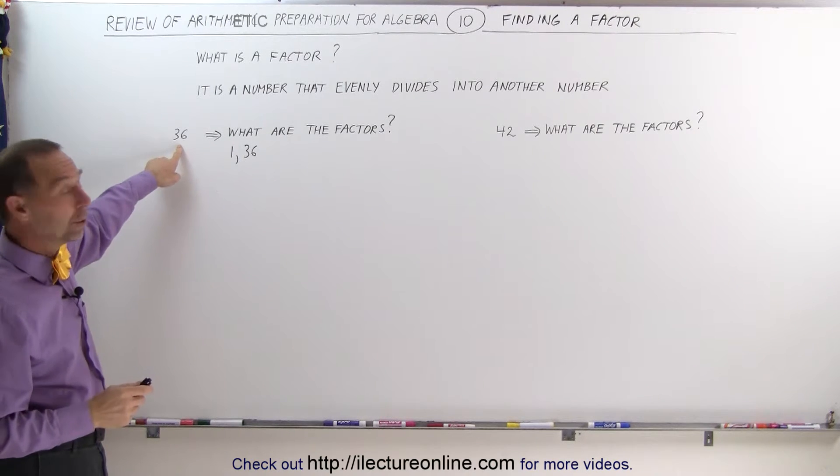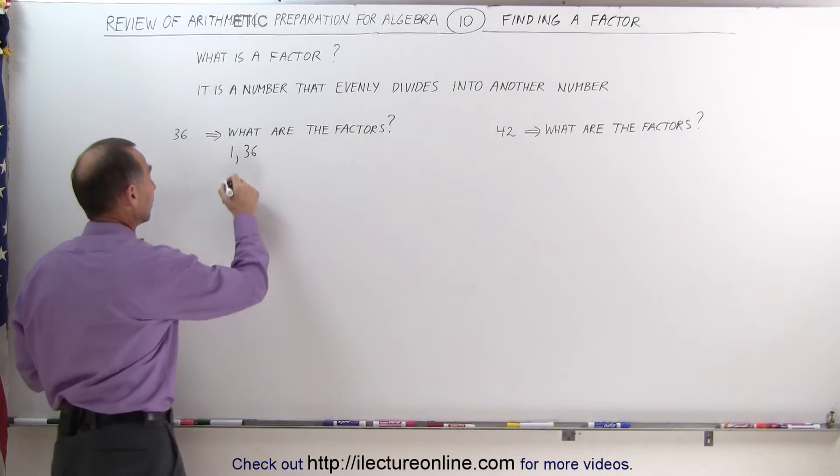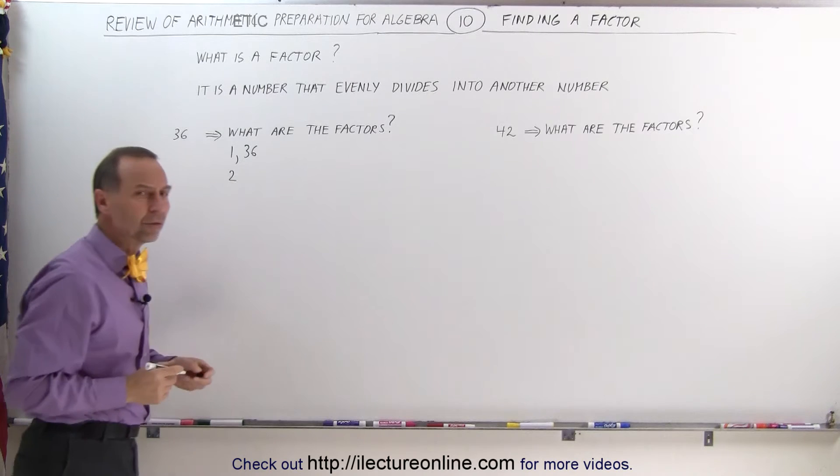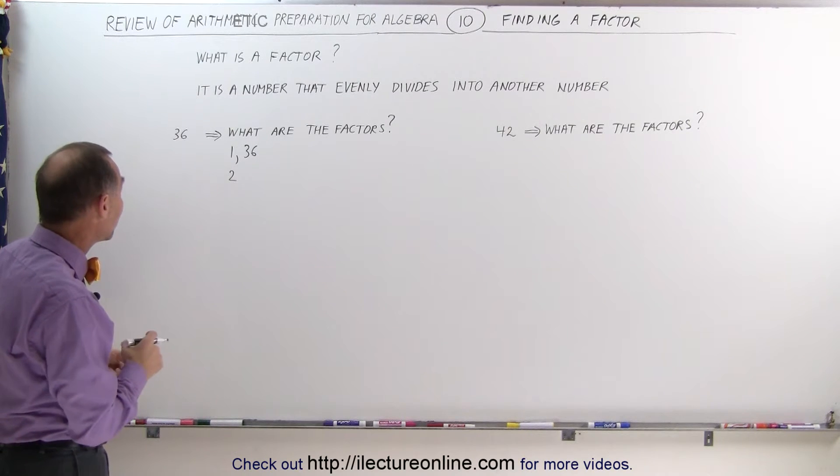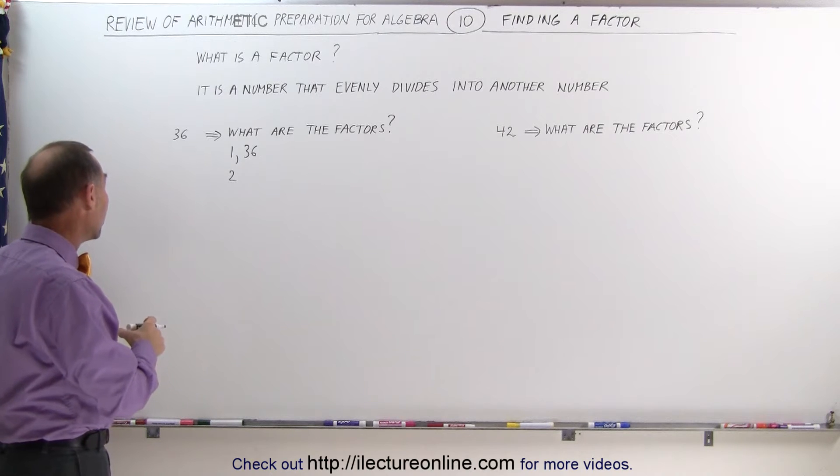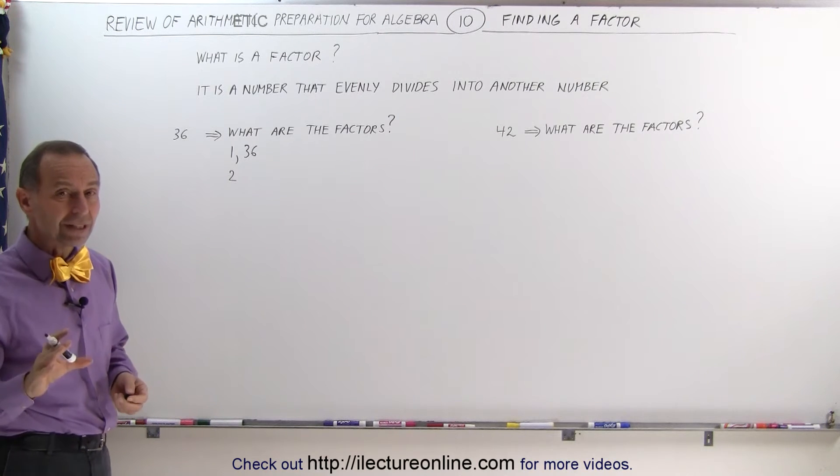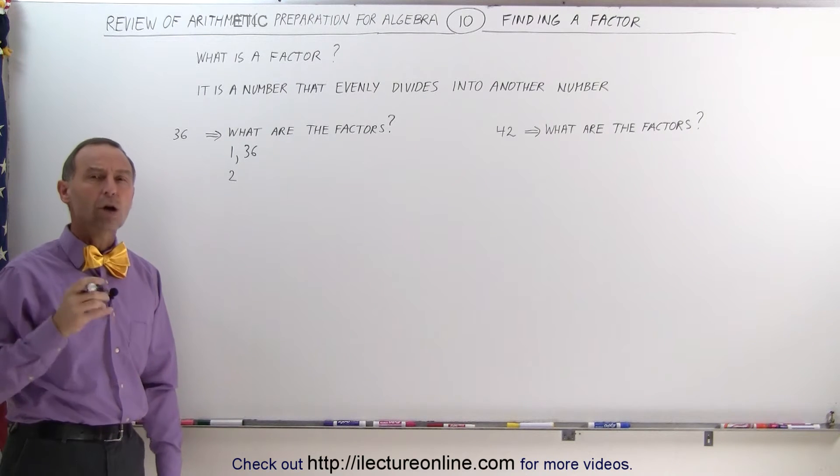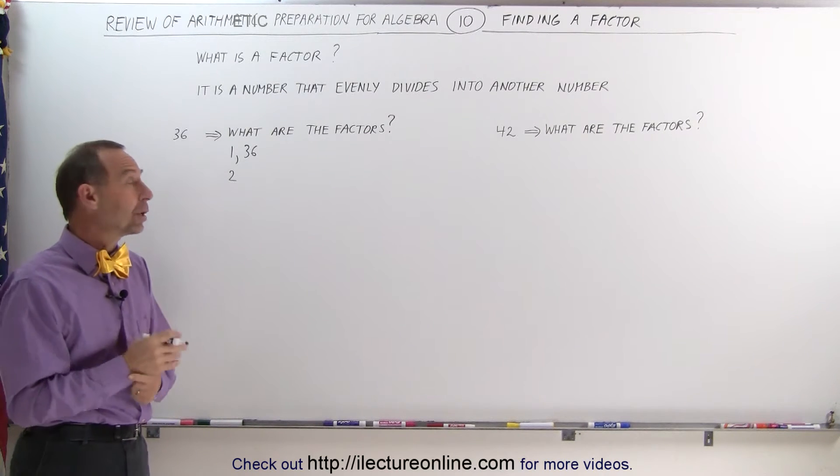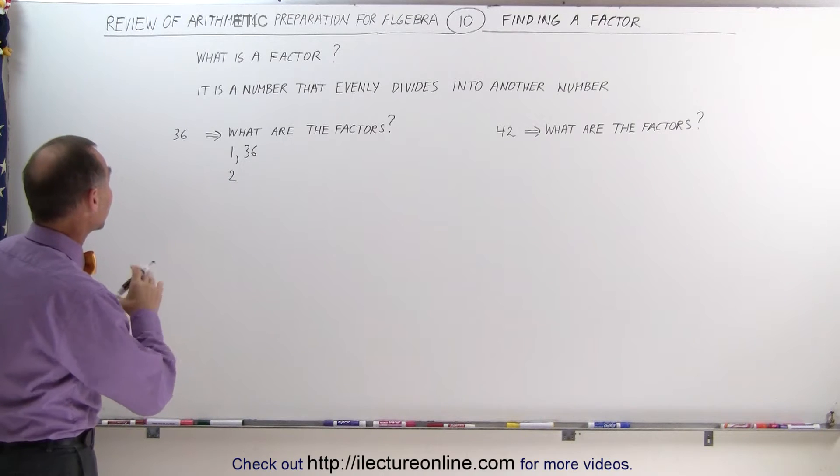But what other numbers fit evenly into 36? Well, since it's an even number, 2 would also be a factor. What other numbers? As you play around with it, you can probably think of the number 6 perhaps, the number 4, the number 9, because all those numbers evenly fit into 36. But how can we find all of the factors? What is the technique we can use?